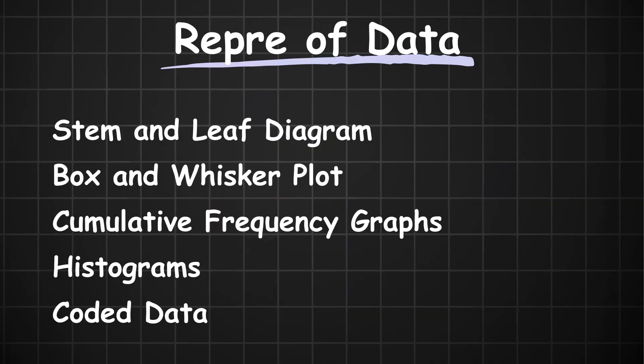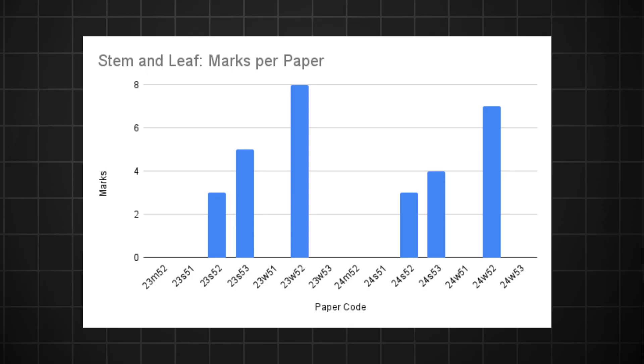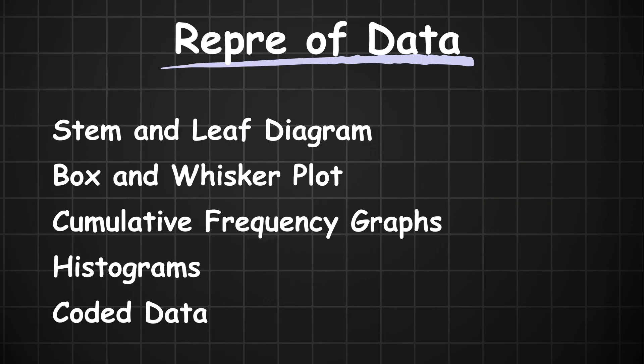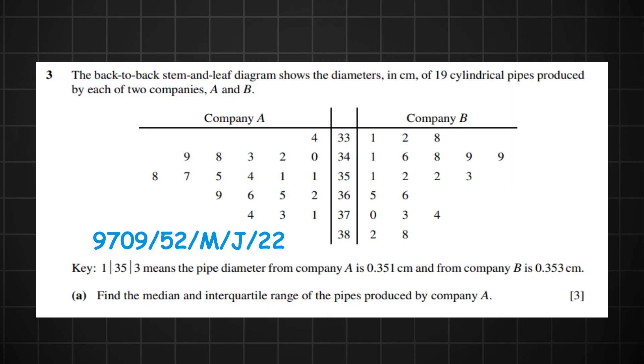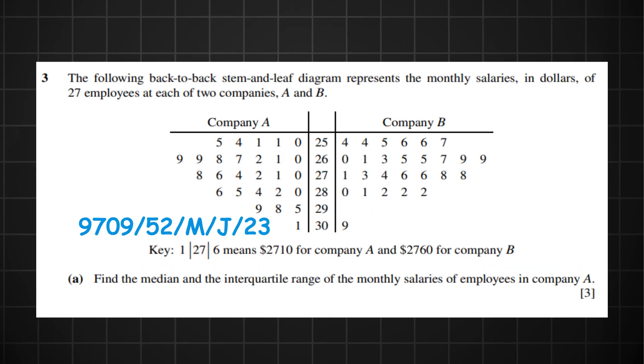We're going to break this down topic by topic, identifying the key questions you should focus on for each topic, starting off with representation of data. There are four possible representations of data, but each paper has on average just one representation. The two most popular are the stem and leaf diagram and the cumulative frequency graph. Cambridge always tries to rotate these representations so there's a different one in each sitting. However, I have noticed that the last three June papers for variant two all had a stem and leaf diagram, so my hunch is that it shows up in the June series. However, Cambridge are always trying to break these trends, so it actually might not show up.